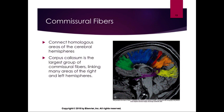Commissural fibers connect the homologous areas of the cerebral hemispheres. The corpus callosum is the largest group of commissural fibers, linking many areas of the right and left hemispheres. This is T1 imaging, which produces some of the coolest images — you can see the different fibers and where they go. The areas linking the two hemispheres coordinate a lot of the information processing.